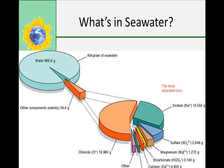Sea salt can come from two basic sources: either from chemical weathering of continental rocks or from Earth's interior. Chlorine, bromine, sulfur, and boron are all emitted as gases from fissures or vents in the ocean floor, so they are strictly from the Earth's interior.